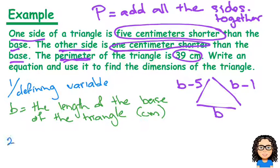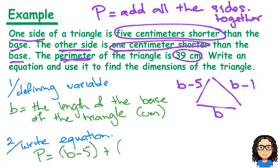Our second step is to write down the equation. I've got a formula for each side of the triangle, and the perimeter has to add up to 39. Perimeter means I add all the sides, so (b - 5) + (b - 1) + b = 39 centimeters. There's my equation.